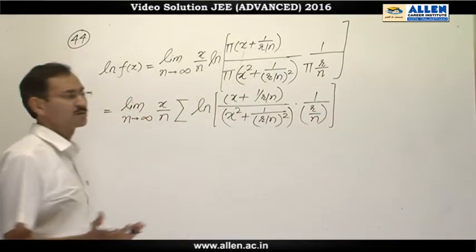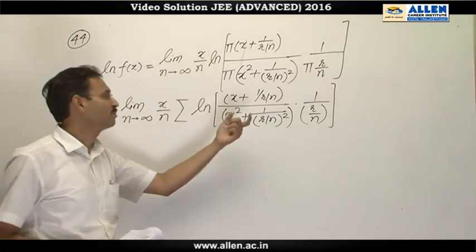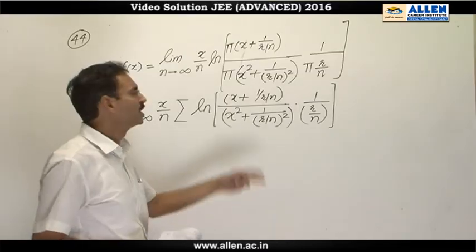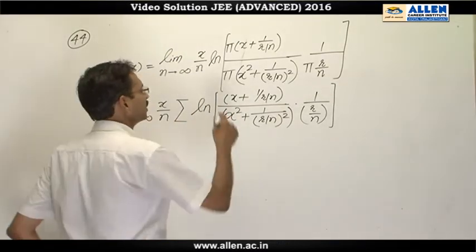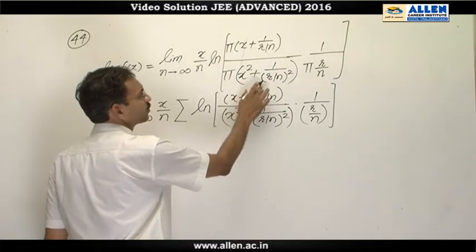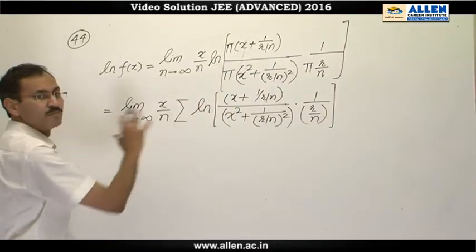Now we will write it in the form of summation. Limit n approaching to infinity, x by n, summation of ln of x plus 1 upon r by n divided by x square plus 1 upon r by n whole square multiplied by 1 upon r by n. This was product of n terms. In every product, r is moving from 1 to n. So I expressed this product as summation.